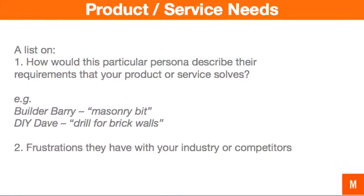The next area is around their product or service needs. Create a list of exactly how this particular persona would describe their requirements. For example, a persona called Builderberry may call what they want a masonry bit, but a persona called DIY Dave who doesn't know the technical terms may call it a drill for brick walls. Identifying what people are calling your product and service is really important for keyword research, product pages, search engine optimization, and Google AdWords campaigns. You also need to build out frustrations this persona has with your industry or competitors — that will help you identify messaging to create for this persona.